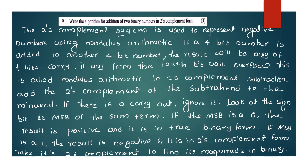To perform subtraction using 2's complement, add the 2's complement of the subtrahend to the minuend. To find the 2's complement, obtain the 1's complement and add 1. You can apply the 2's complement formula for the value.